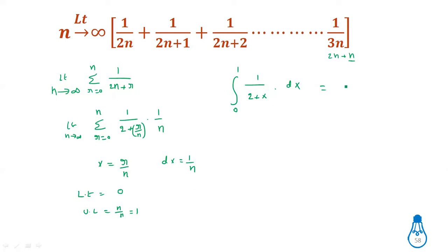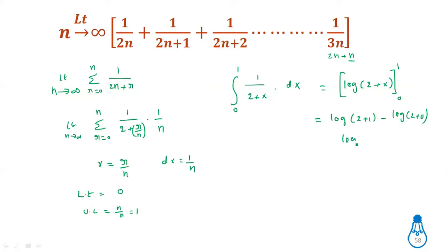Using the standard formula, integration of 1/(2+x) gives log(2 + x), evaluated with limits 0 to 1. Substituting: log(2+1) minus log(2+0) equals log 3 minus log 2. Using log a minus log b equals log(a/b), the answer is log(3/2).